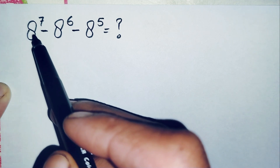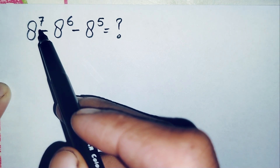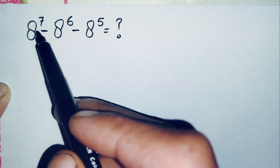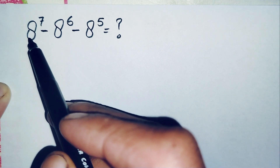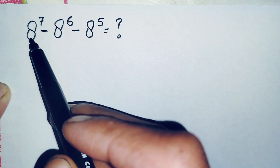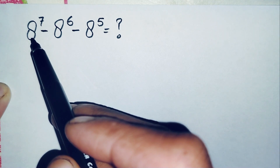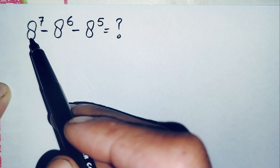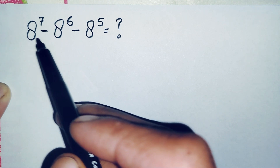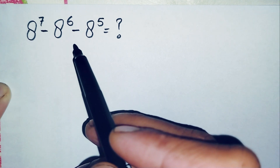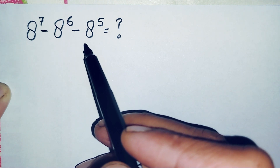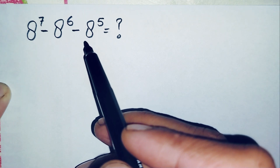The first way is to multiply 8 seven times, but multiplying 8 seven times will be a little bit difficult. So here we can use another method, which is to change all of these bases — 8 — to its exponential form having 2 in the base.